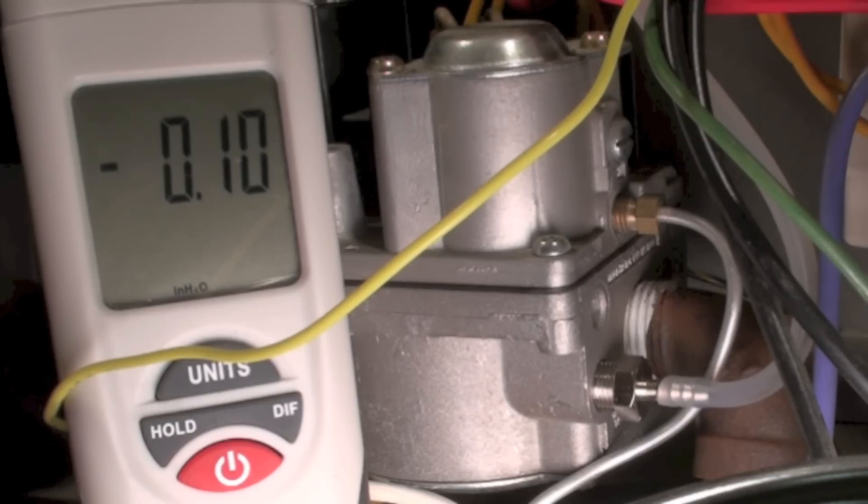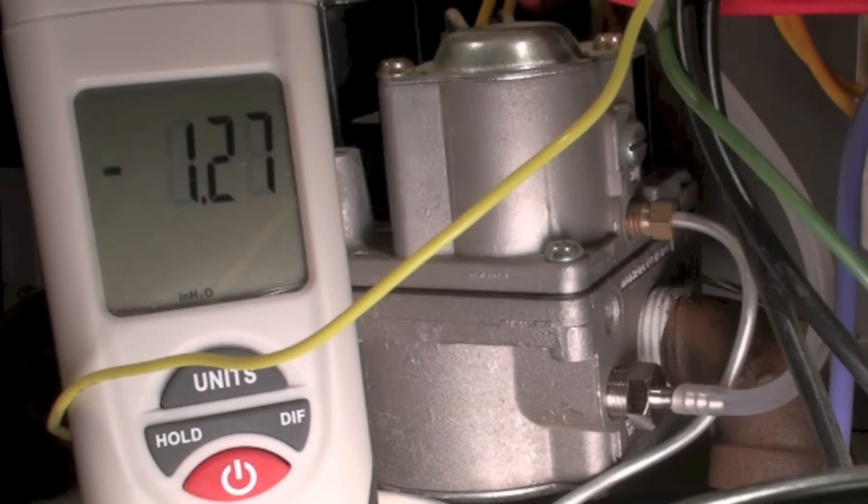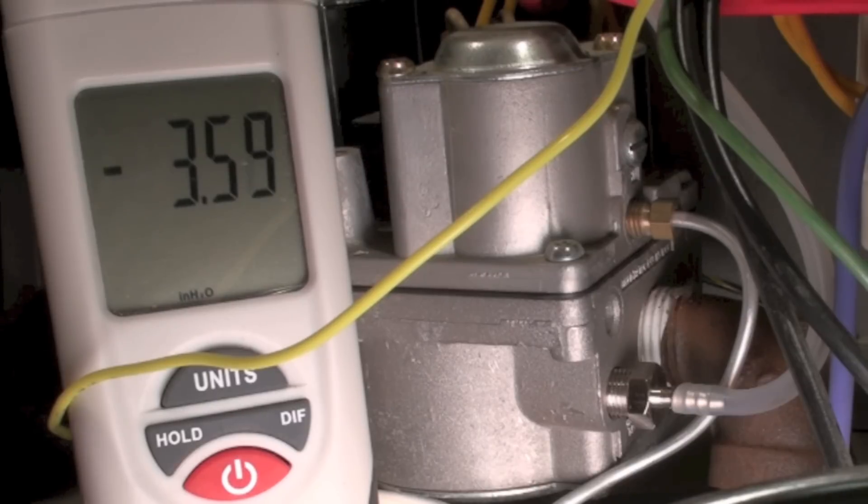I'll talk more about this a little later, but you see we're already reading one-tenth. Now manifold pressure on this is supposed to be 3.5, so when this thing fires up we'll take a look at it and see what it comes up to. Okay, see we're up to pressure. We're running just a skosh over 3.5.